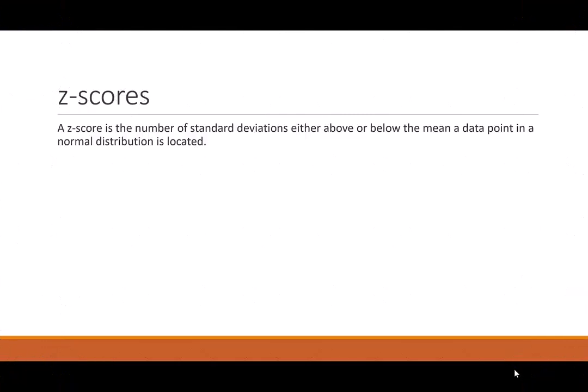So we really want to start with the definition. What is a z-score? A z-score is the number of standard deviations either above or below the mean a data point in the distribution is located.